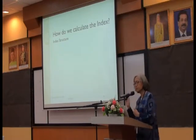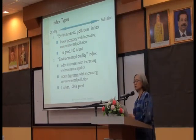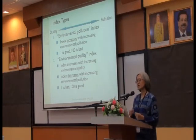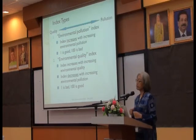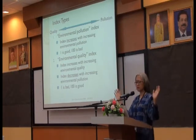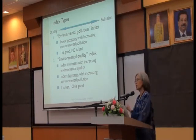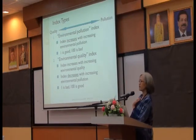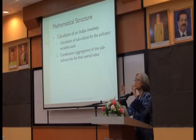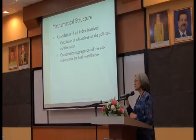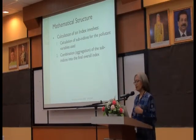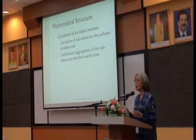So how do we calculate an index? Indexes in the environment are normally either a pollution index or a quality index. For a pollution index, the index increases with increasing pollution — normally for air. For a quality index, the index increases with increasing quality — normally for water. Most of the mathematical structures involve getting smaller data into one number. You start off with indicators — measurements of single parameters, single changes — and try to lump them all together. There are many combinations and aggregation methods for combining this data into one value.